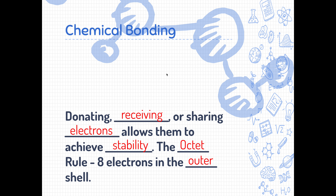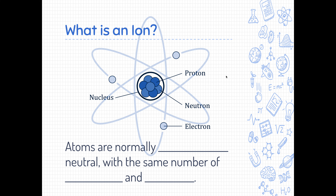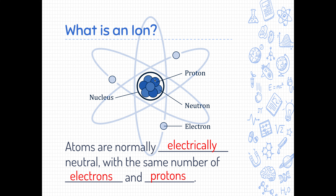We'll talk about the different types of bonding. So an ion — we've discussed ions before. Atoms in their normal state are electrically neutral, where they have the same amount of protons and electrons. So if you have an element like beryllium, which has atomic number four, that tells me it has four protons, and because it's electrically neutral, that also tells me it has four electrons. This element, atomic number three, has three protons, three electrons, and four neutrons, so this is some sort of isotope.